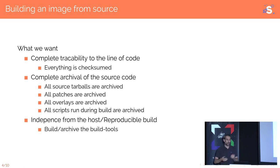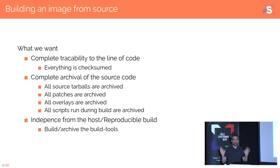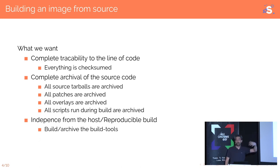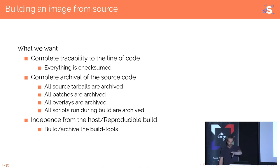Because of legal requirements and because we need to manage software over the very long term — like 20 years — we need complete traceability to the line of code. Everything needs to be checksummed and we need to make absolutely sure that every line of code in our product is archived: all source tarballs, all patches, all overlays, and all scripts we run during building. We also need to be very independent from our host system, because in 20 years Ubuntu 26 will not work with packages we've been building now. So we need to archive all our tools — compilers, autotools, the source of the compilers, all of that.